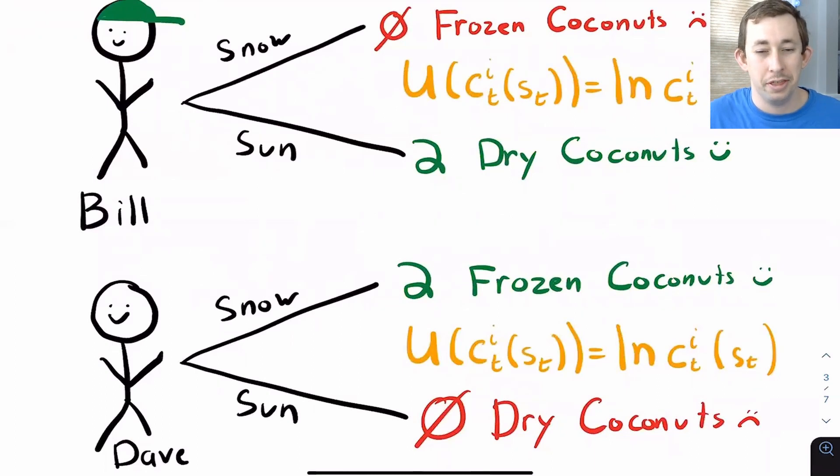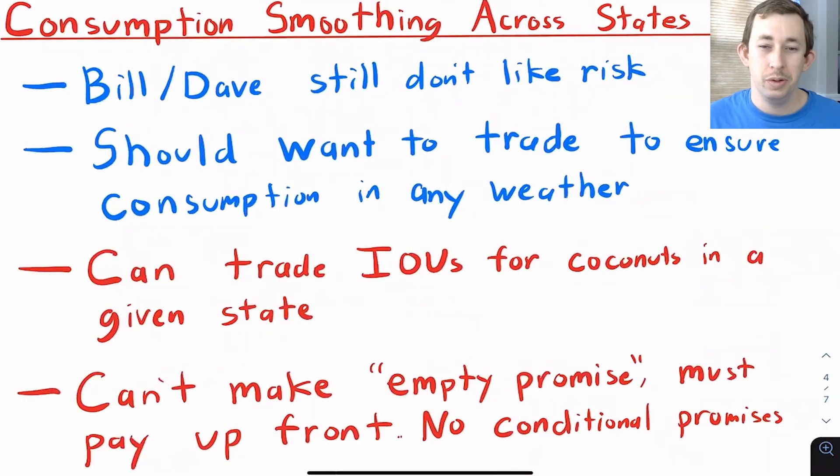It just makes it easier to think about what's happening as you go through the problem. Now we've talked about consumption smoothing before and we've talked about consumption smoothing across time as my endowment goes up and down through different days. But that same concept of consumption smoothing is going to hold here across states.